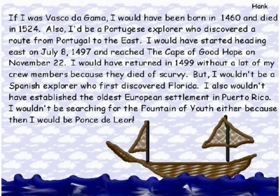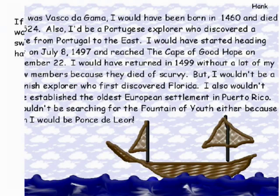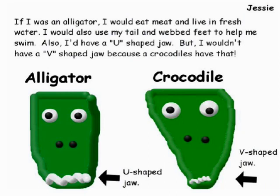It's easy to differentiate. Your at-risk kid may only be able to give you one or two facts on each, and that's okay. The goal is to have them give you what they can give you and show comprehension the best way they know how. This was done by a second grader: 'If I was an alligator, I would eat meat and live in freshwater. I would also use my tail and my feet to help me swim. I'd have a U-shaped jaw, but I wouldn't have a V-shaped jaw because crocodiles have that.' For our ESL students, they can show comprehension just by illustrating — you don't need all that text. I need to know that you understand the curricular topic, so if you can show it in an illustration, more power to you.